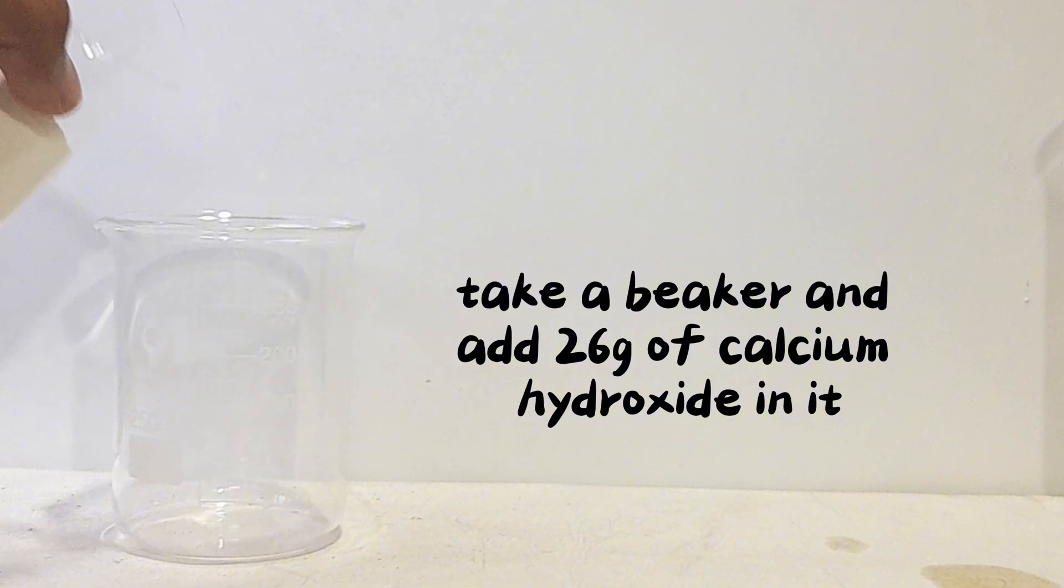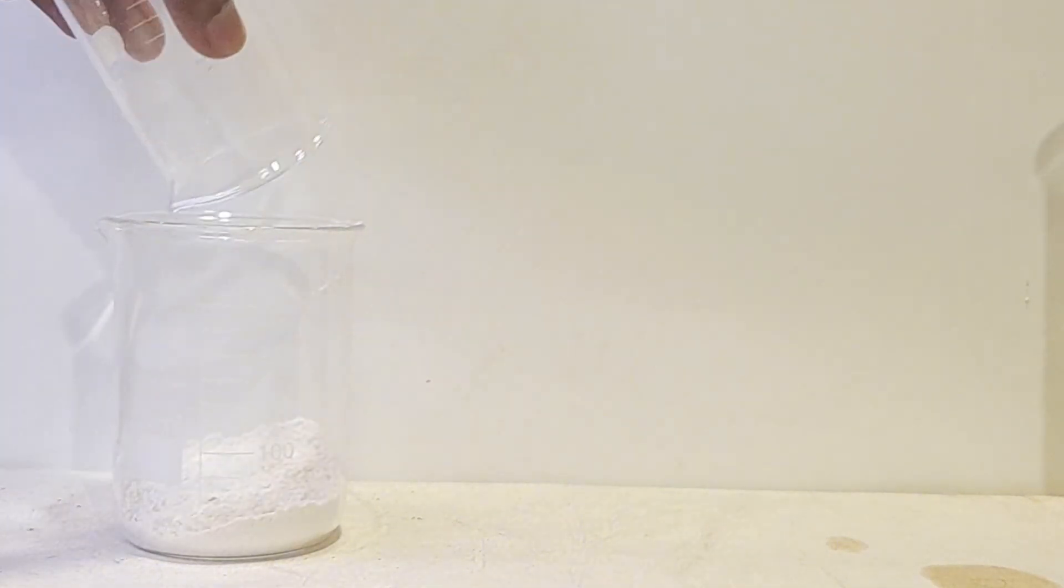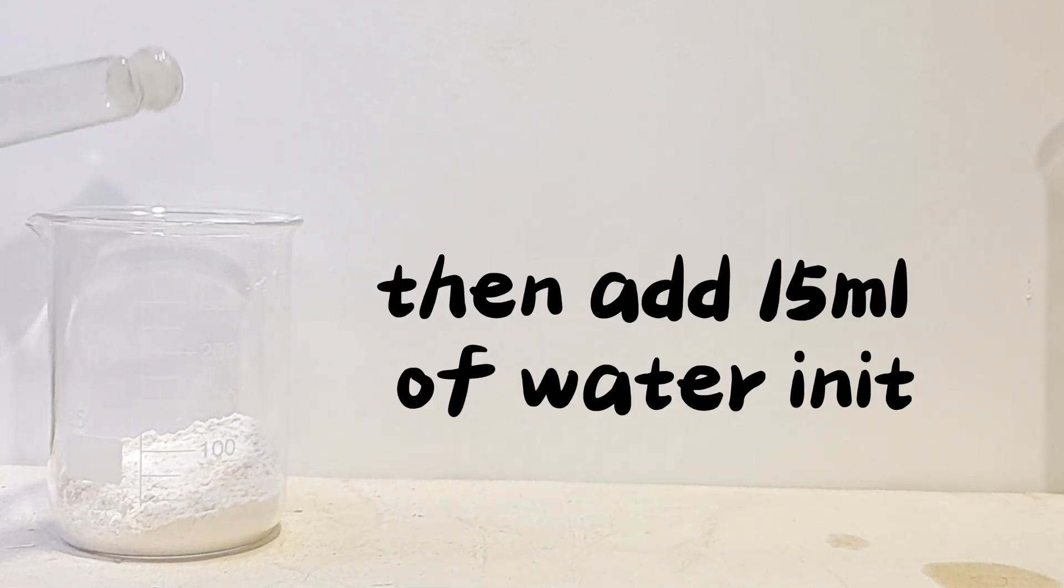Take a beaker and add 26 grams of calcium hydroxide in it. Then add 15 milliliters of water in it.